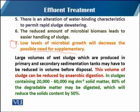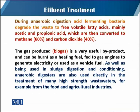During anaerobic digestion, acid-fermenting bacteria degrade the waste to volatile fatty acids, mainly acetic acid and propionic acid, which are then converted to methane and carbon dioxide — mostly called biogas. This biogas is a very useful by-product and can be burnt as a heating fuel, fed to gas engines to generate electricity, or used as vehicle fuel.